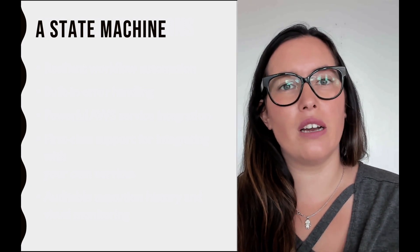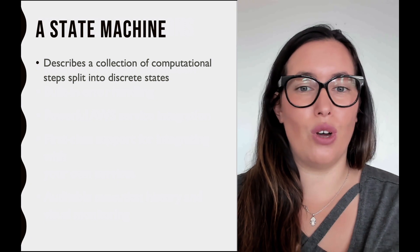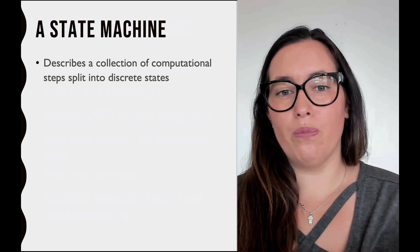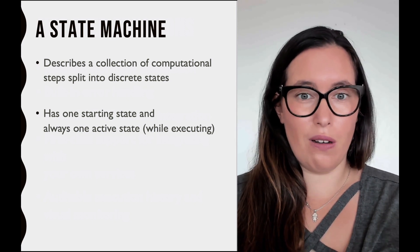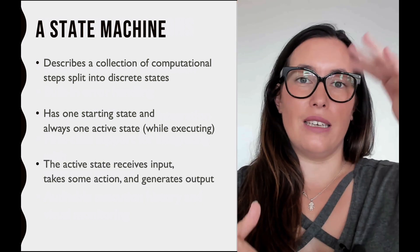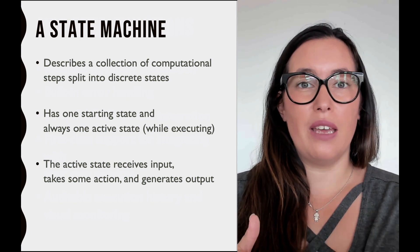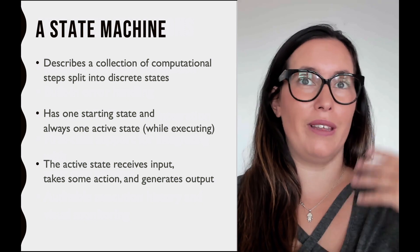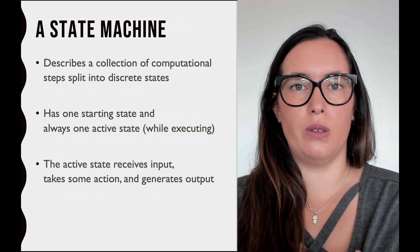The first concept you need to understand in order to start understanding what step functions are is what is a state machine. A state machine is basically a collection of states that have a flow. You have a starting state — one only — and an end state — one only. As you move forward through the different collections of states, the input will be shared from one state to another: one will be the input of the state and the other will produce an output, and that output will be the input to the next state.